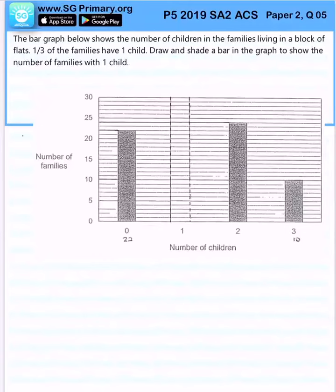The bar graph below shows the number of children in the families living in a block of flats. One third of the families have one child. Draw and shade a bar in the graph to show the number of families with one child.